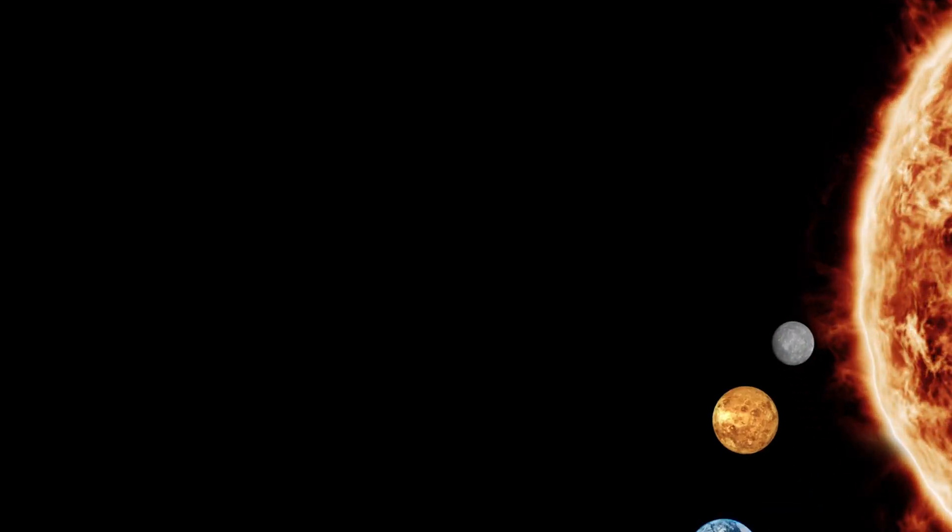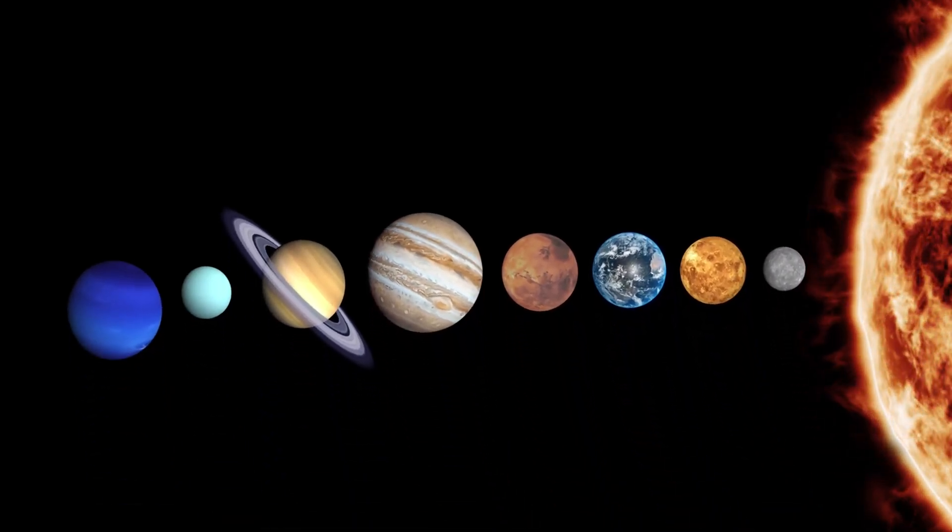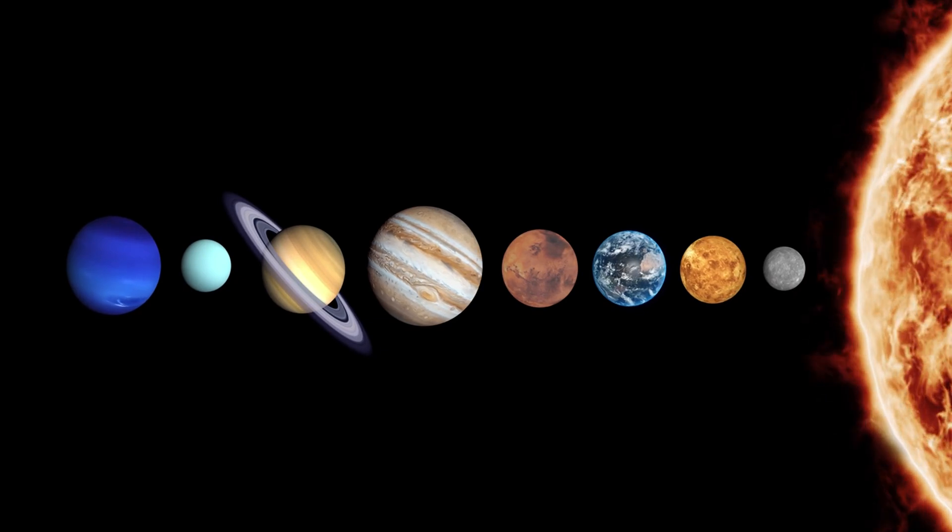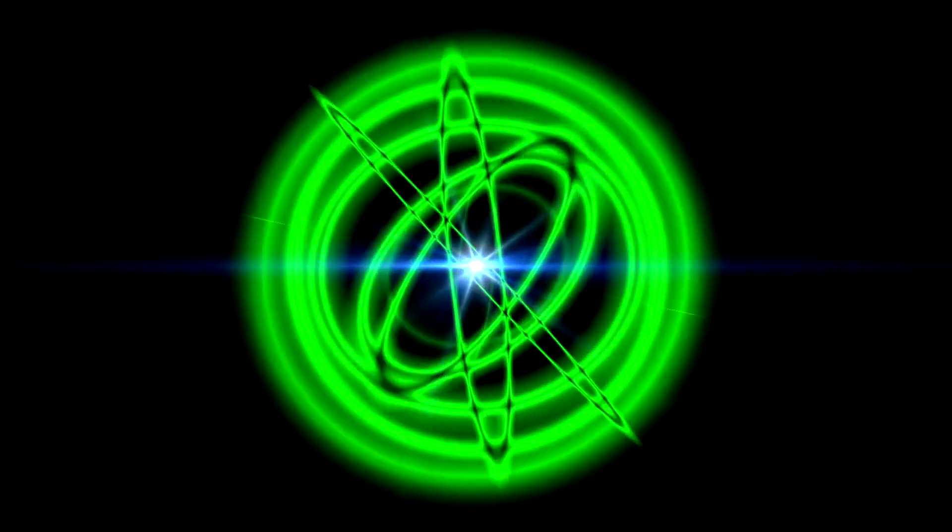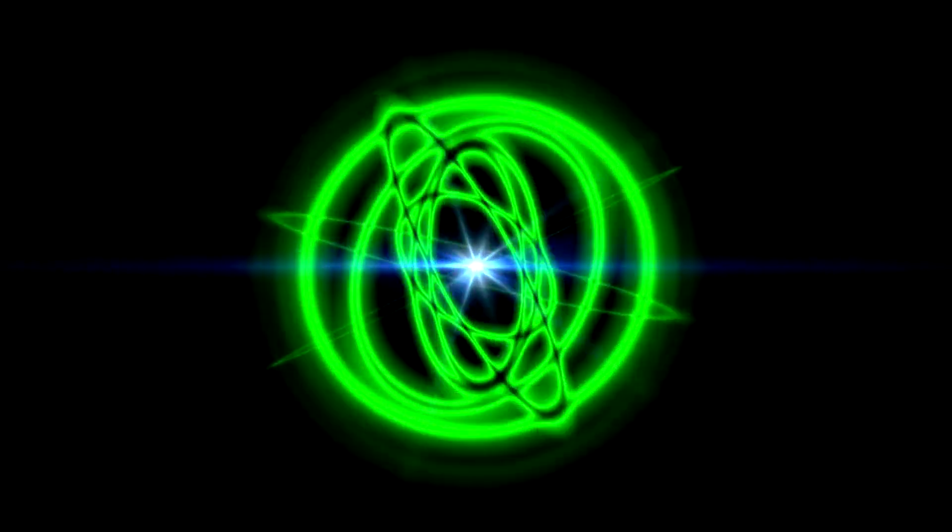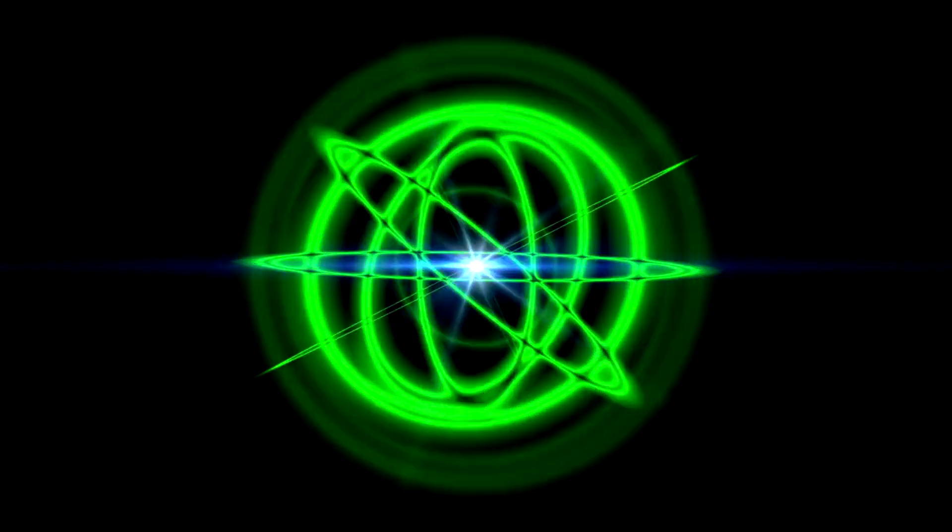Modeling its rotation suggested a period of approximately 9 hours, showing signs of chaotic tumbling. As the nucleus rotated, sunlight illuminated new areas, triggering bursts of activity that altered its appearance throughout the day.